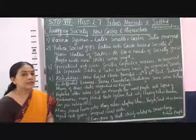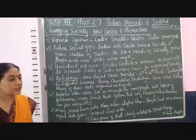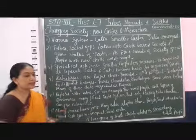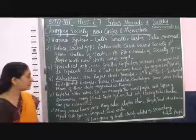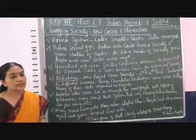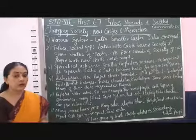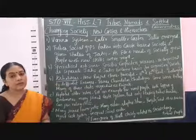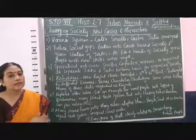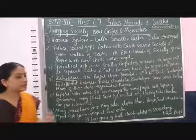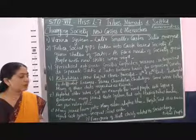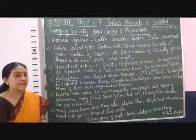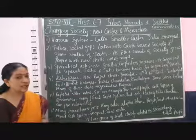Many of these Rajput clans were actually tribal people who converted themselves into caste-based societies. Clans like the Minas, Chandelas, and Chalukyas started categorizing themselves as Rajputs. Many of these Rajput rulers replaced older rulers and became new rulers, setting an example for other tribal people. With the support of Brahmanas, many tribal people started converting themselves into Rajputs and joining the caste system.